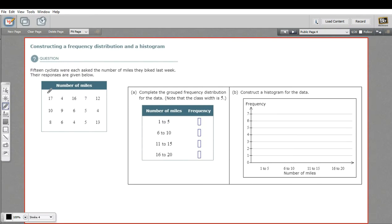This problem, we are going to take a set of data here. In this case, it's the number of miles that 15 different cyclists biked in last week. And then we're going to do two things.